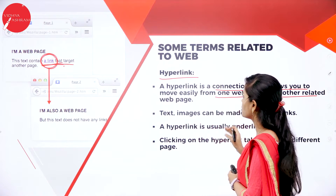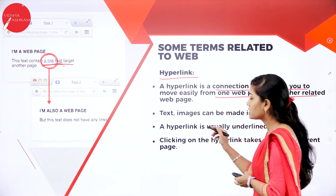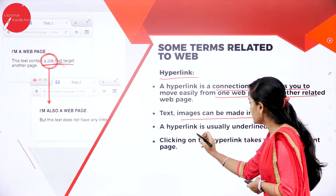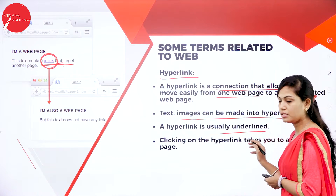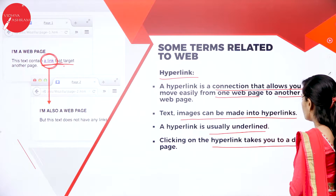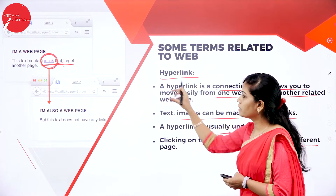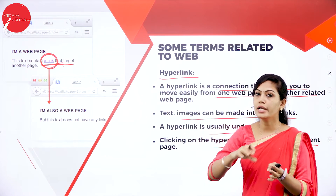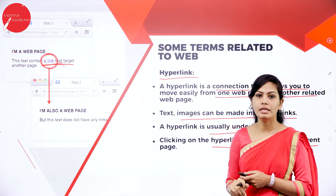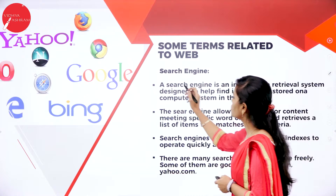All text and images can be made into a hyperlink. A hyperlink is usually underlined, and clicking on it takes you to a different page. If you click on that link, you will go to another page. This is about hyperlink.